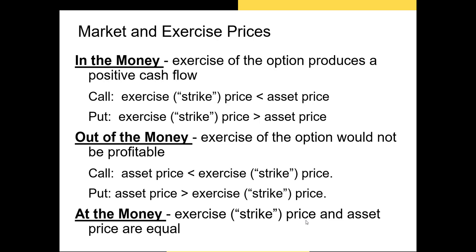Now that we know how to calculate payoff and profit, let's define three phrases. First, in the money: if you exercise the option you receive a positive payoff. For a call option, the strike price is less than the current price of the underlying asset. For put options, the strike price is greater than the market price of the underlying asset — in both cases, the option is in the money.